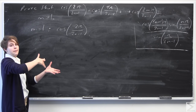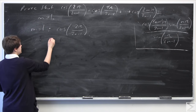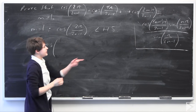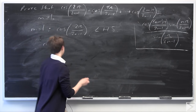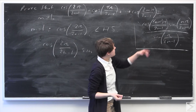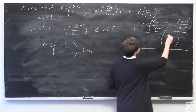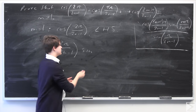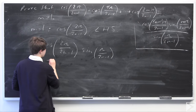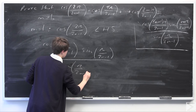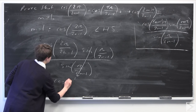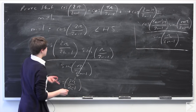For the right-hand side, I'm going to plug in m equals 1 to see if this equality holds. If m equals 1, then n plus 1 becomes 2, so we have cosine of 2 pi over 2n minus 1. Then we have sine of m pi over 2n minus 1, which with m equals 1 gives sine of pi over 2n minus 1, all over sine of pi over 2n minus 1. Since we have the same term in the numerator as in the denominator, these cancel out to 1, and this entire expression equals cosine of 2 pi over 2n minus 1.